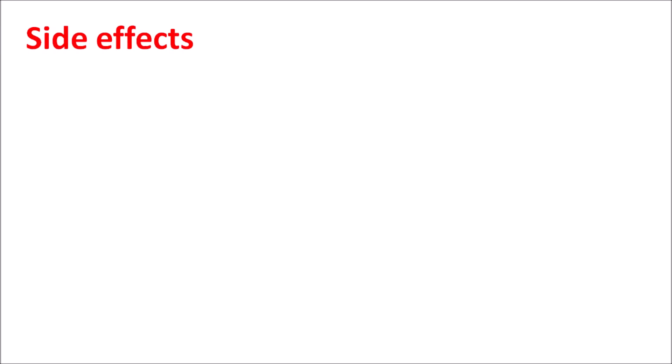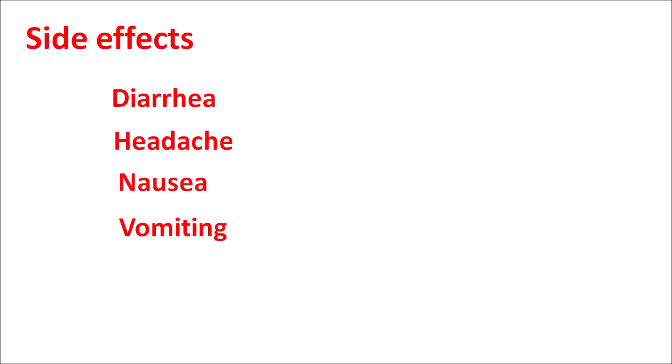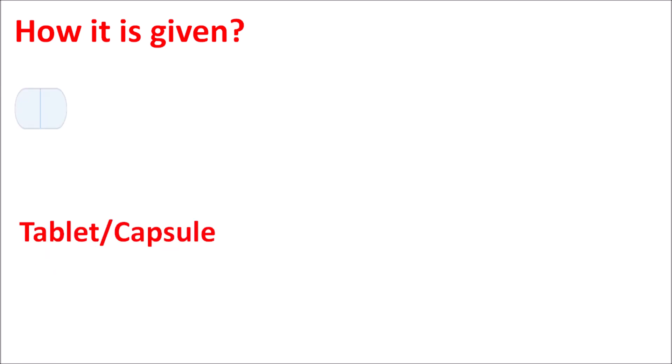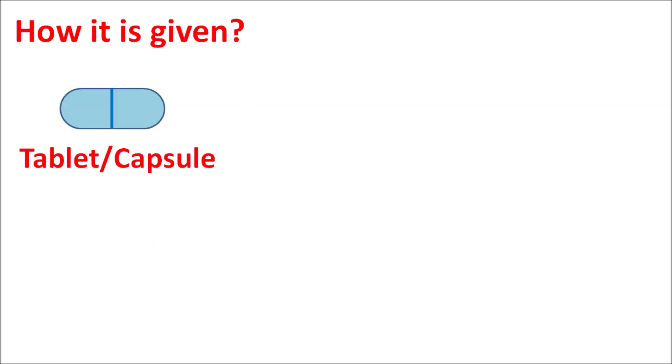The side effects of simethicone: since this drug acts on the gastrointestinal system, it can produce side effects related to the GIT. It can cause diarrhea, headache, nausea, and vomiting. This drug is not significantly absorbed, so it only shows local side effects on the gastrointestinal system. The drug is available as tablets, capsules, and oral suspension.